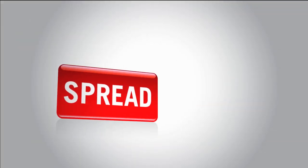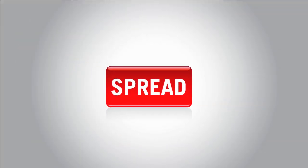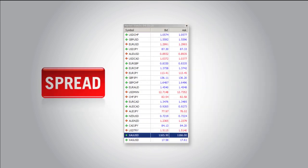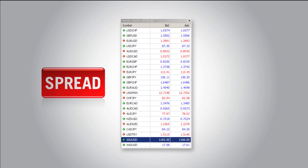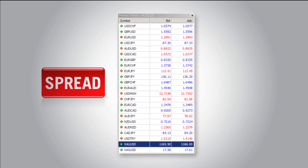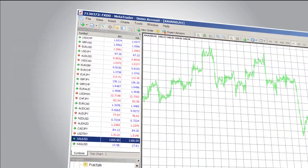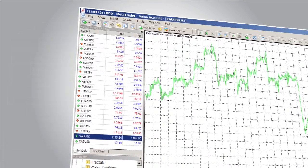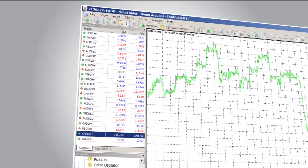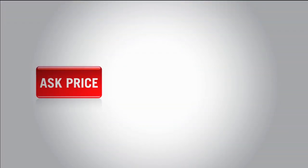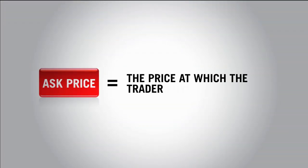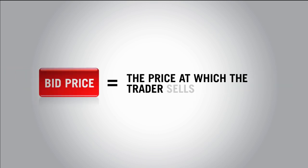In the Forex market, the spread is another essential component of trading. You will see here a screenshot from our MetaTrader 4 platform offered at FXDD. The spread is the distance measured in pips between the bid and ask price. You will see four decimal points represented on most of these currencies, with the exception of the dollar yen, which only has two. The ask price is the price at which the trader buys the pair, also known as the offer price. The bid price is the price at which the trader sells the pair.